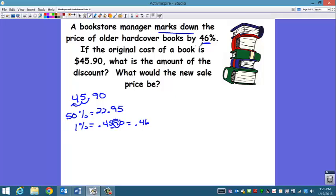to find my 46%, I'm going to take my 50%, and I'm going to subtract 4%. And that will give me my 46%. So my 50% I know is $22.95. Now, to find 4%, all I have to do is take this 1% amount,